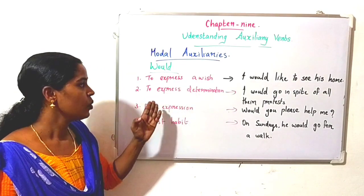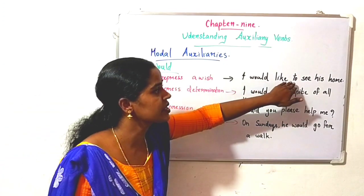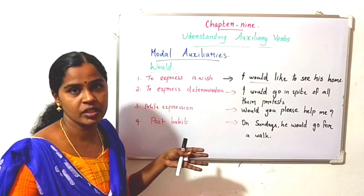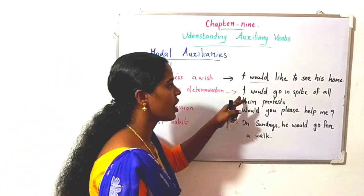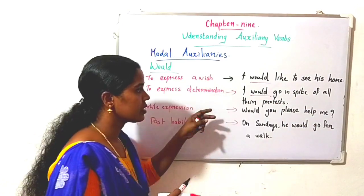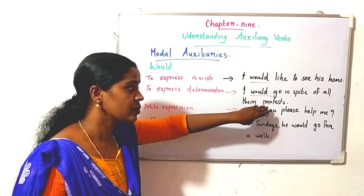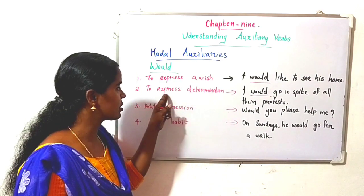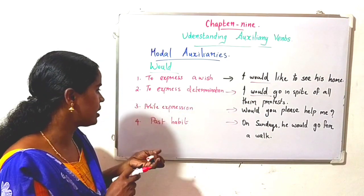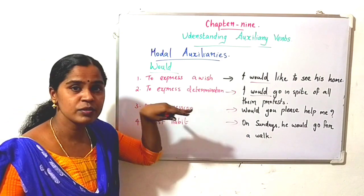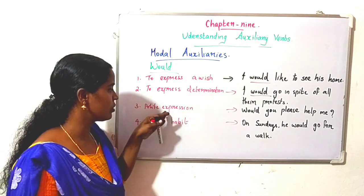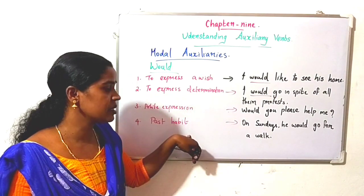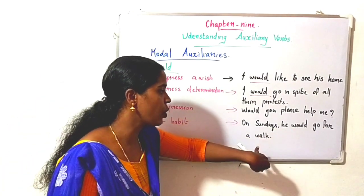Next auxiliary is would. Would is used to express a wish: 'I would like to see his home' — wish is expressed using would. The second situation is to express determination: 'I would go in spite of all their protest' — here it is the person's determination to go on with his own action without minding others' protest.